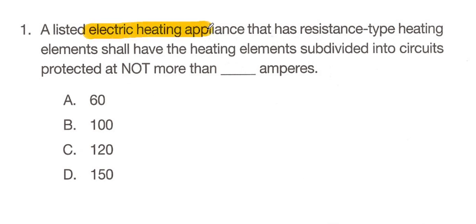"Electric heating appliance" is the next big key word — it's answering the question of what. What are we trying to find information about? An electric heating appliance. Now, of these three words, I think the bigger key word is "appliance." Appliance is telling me that we should probably be looking for the answer in the article about appliances and not electric heating equipment.